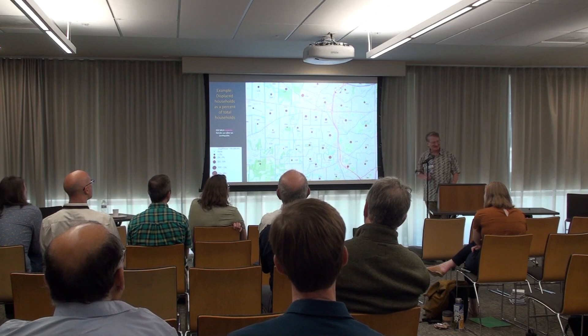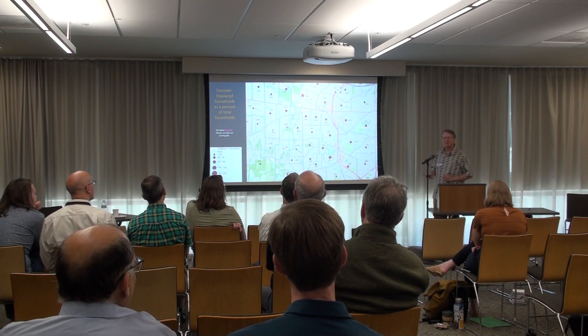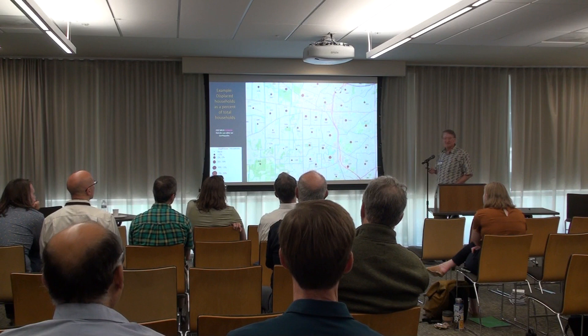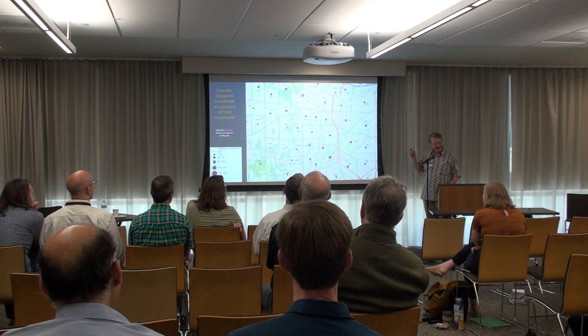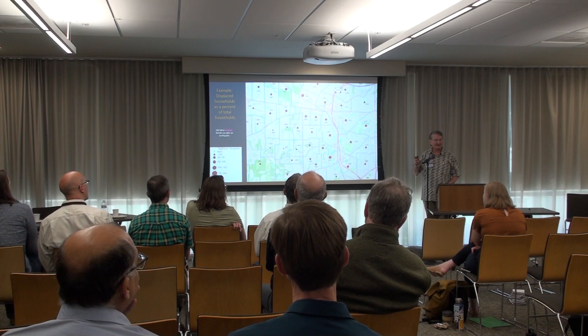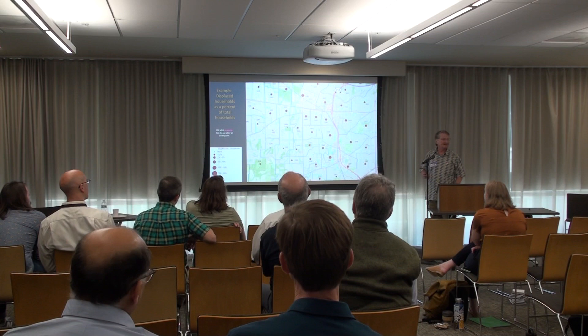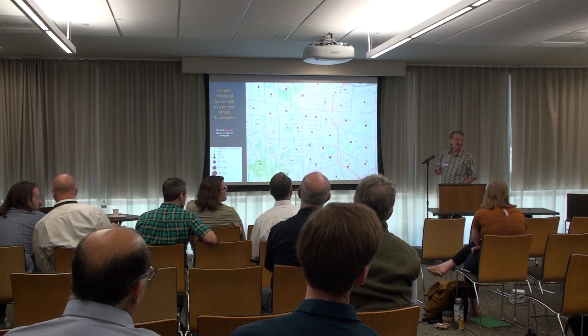It's more than buildings. Here I'm showing the displaced population — displaced households. A household is like a single-family residence; a 10-unit apartment building is 10 households, about two to three people per household. This shows proportionally across the census tract how many households may be displaced — it doesn't mean how many need shelter. That's a different question, because some people have resources or may go live with friends. But this data could be helpful.